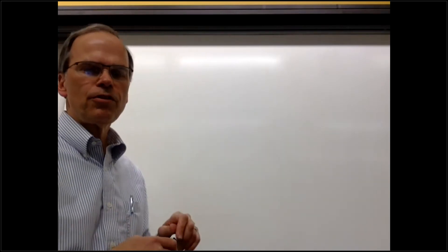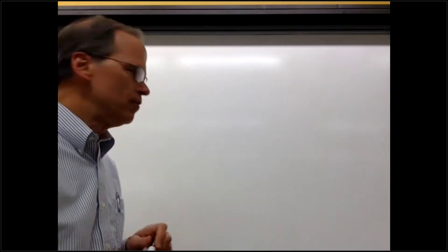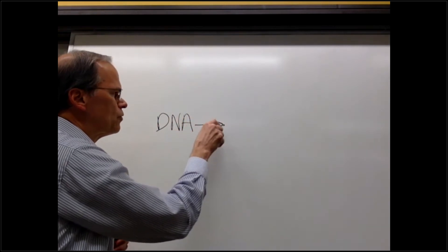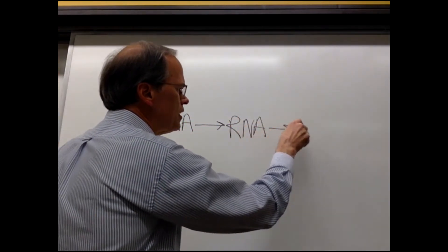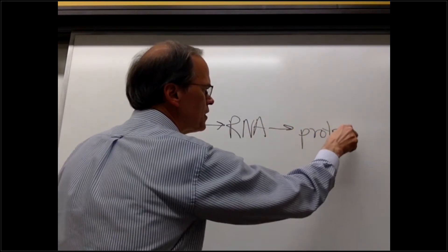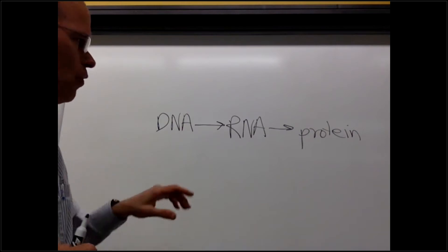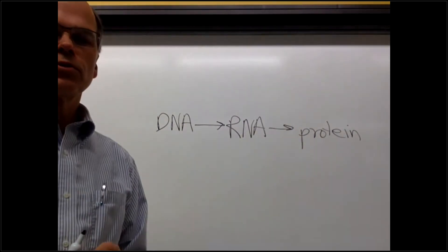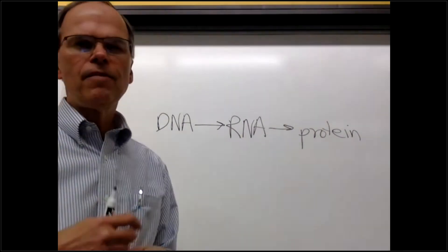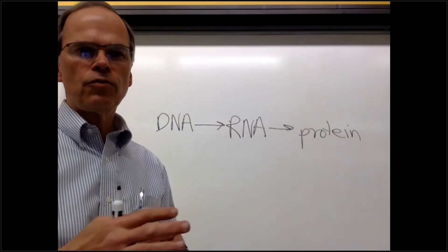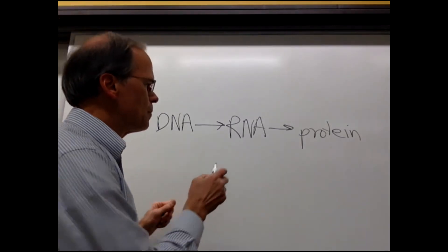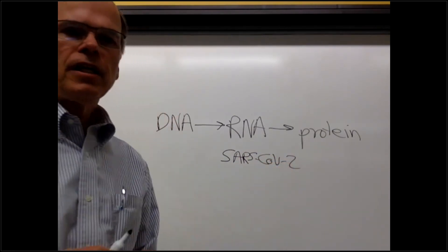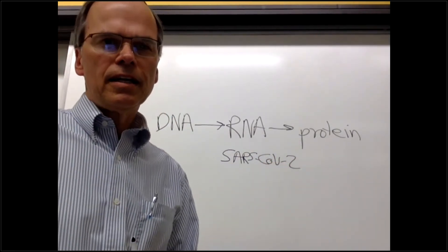Let's start with the basic foundation of biology, which is this notion that we have these information molecules of DNA, which of course make RNA, which make protein — this is the way that cells are put together. The information that flows from DNA to RNA is then reinterpreted as protein molecules. This is the way our own cells work. Well, of course, many viruses tend to short-circuit this particular information flow. The virus that causes COVID-19 is SARS-CoV-2.